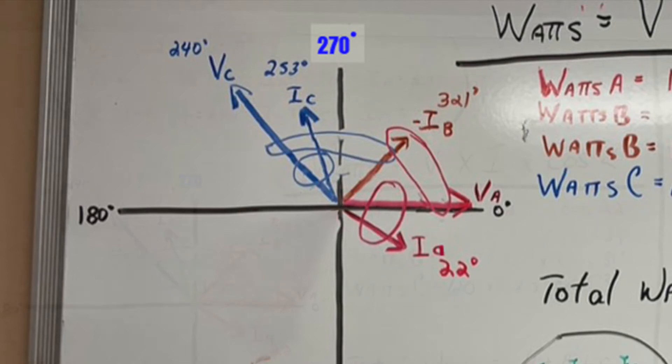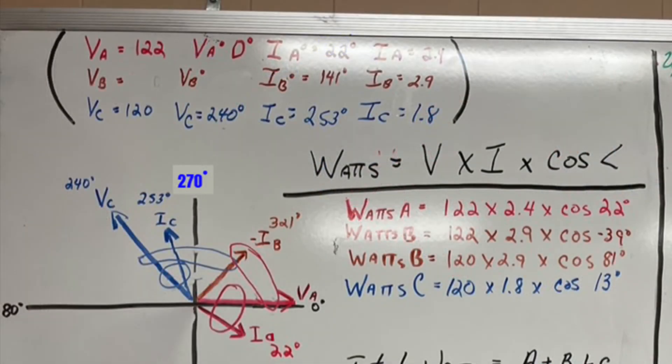Okay, now we're going to go ahead and figure out the watts for this. And what we're going to do is we're going to go ahead and circle VA to current A and we'll have 122 volts times 2.4 times cosine of 22 degrees. So that tells me the watts for phase A.